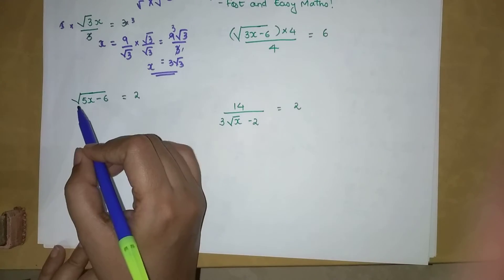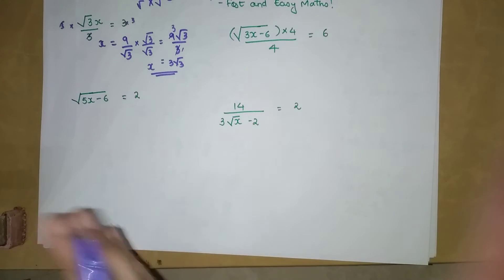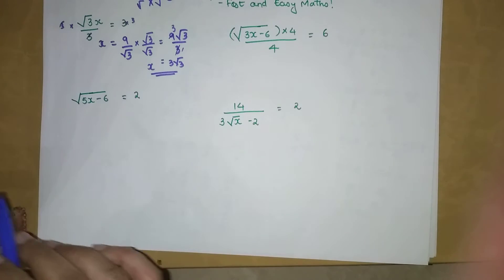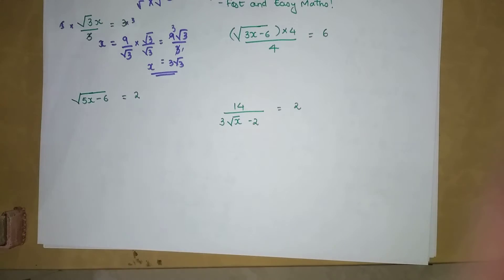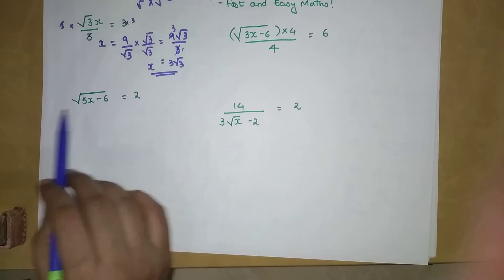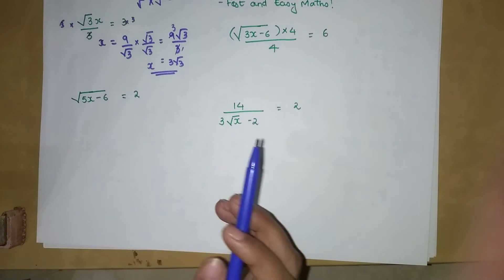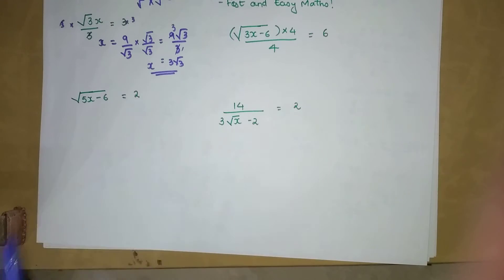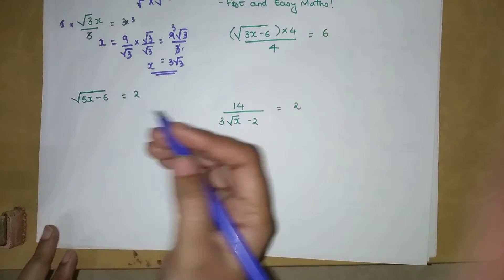When you have x coming under a root — meaning the root is covering your whole LHS or RHS, especially the side with a variable — you need a specific approach.